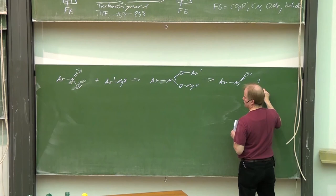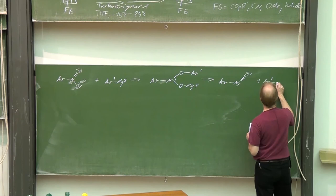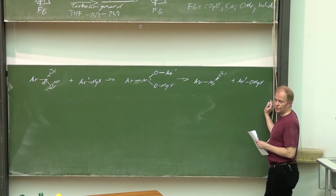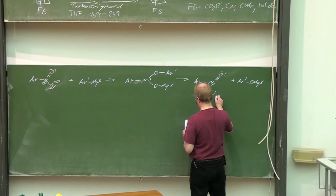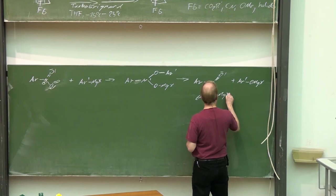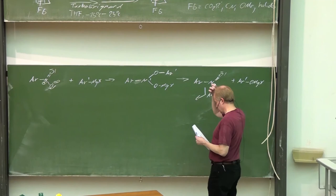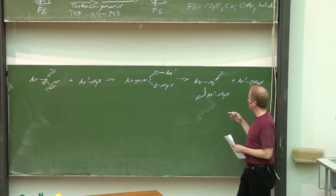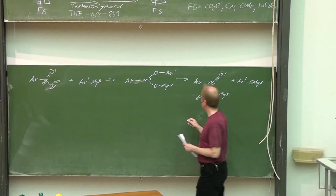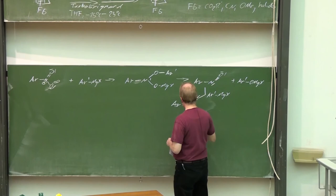We get the nitroso compound plus aryl prime O and the X phenolate, magnesium phenolate. Then the second equivalent of the aryl magnesium halide reacts with the nitroso group. This time it reacts with the regioselectivity we would have anticipated before: connection of the aryl group with that nitrogen. Aryl, aryl prime, oxygen, and MgX here.